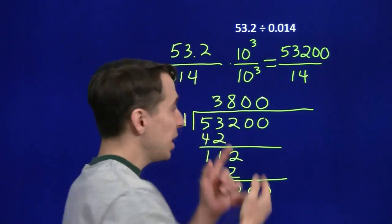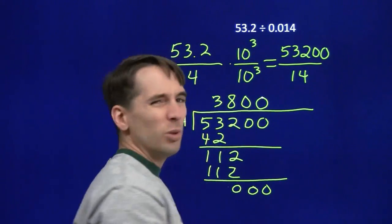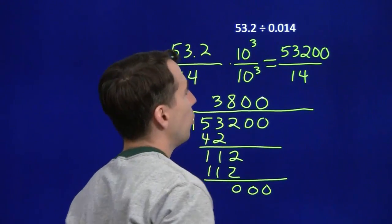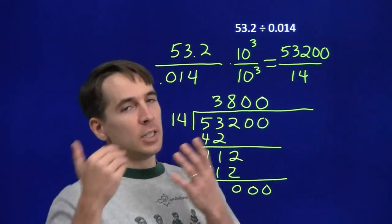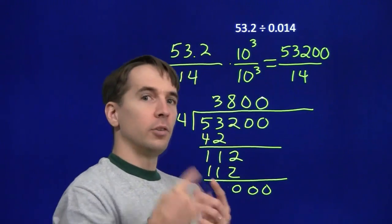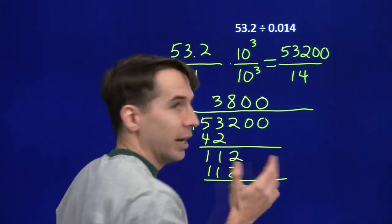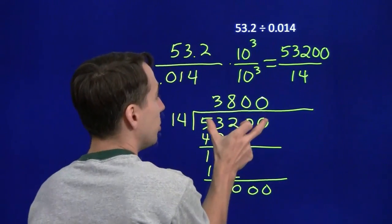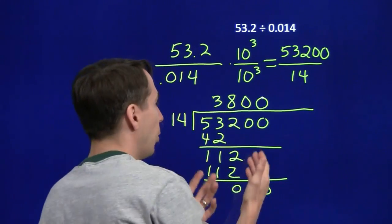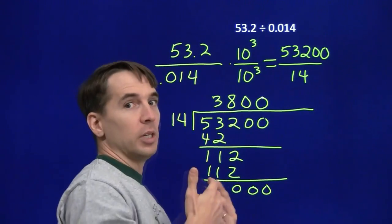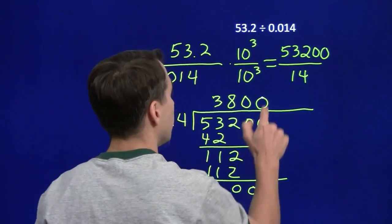And we can, again, use a quick estimation to see that we're at least close to the right answer here. 53.2, that's around 50. 0.014, that's around one hundredth. So this is going to be somewhere close to 50 divided by one hundredth. If you divide by one hundredth, that's the same thing as multiplying by 100. 50 times 100 is around 5,000. Well, that is 5,000. So we expect our answer to be around 5,000. This is around 5,000, so we're at least sure that we didn't get the decimal point off by one. If the answer shouldn't be 380, it shouldn't be 38,000, we're pretty confident our 3,800 is correct. We have the right answer.